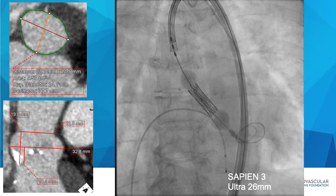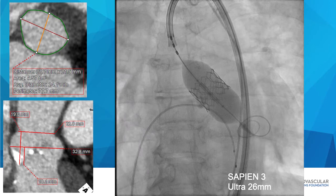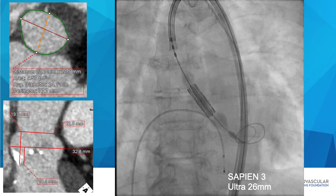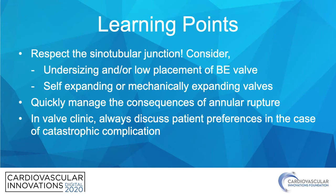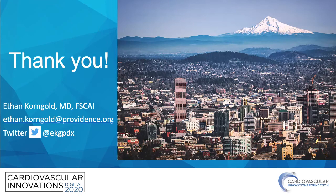In retrospect, I think the key issue was sizing — specifically the interaction of the 26mm Sapien III with the sinotubular junction — which likely caused the aortic annular rupture and dissection. This case illustrates several consequences of annular rupture: pericardial effusion and tamponade, ascending aortic dissection, coronary artery obstruction, and cardiogenic shock. Learning points: respect the sinotubular junction; consider undersizing and/or low placement of balloon-expandable, self-expanding, or mechanically expanding valves. If annular rupture or dissection are identified, consequences must be managed quickly — whether percutaneously or surgically. In the valve clinic, always discuss patient preferences in the case of catastrophic complication.